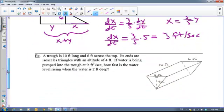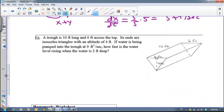All right, so let's do one last example here. I've got a trough is 10 feet long and 6 feet across at the top. Its ends are a isosceles triangle with an altitude of 4 feet. If water is being pumped into the trough at 9 cubic feet per second, how fast is the water level rising when the water is 2 feet deep?